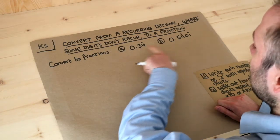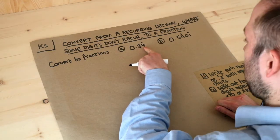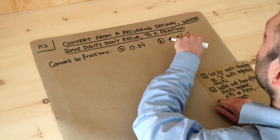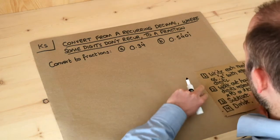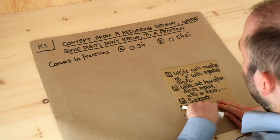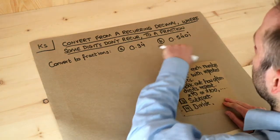So we've got these two examples here: 0.34 recurring, I'll explain what that means in a second, and 0.5401 recurring. Now I've stolen these notes from my previous video on this and this explains what steps we carry out to solve each of these problems.